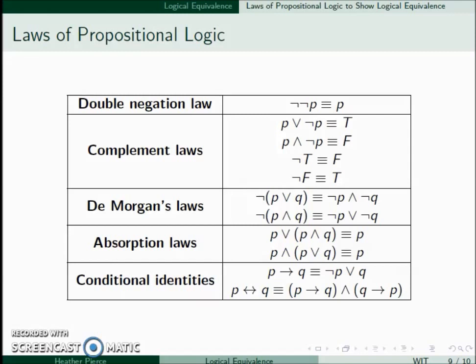The absorption law says P ∨ (P ∧ Q) is equivalent to P, and P ∧ (P ∨ Q) is also equivalent to P. The last one is the conditional identities: if P then Q is equivalent to ¬P ∨ Q, and P if and only if Q is equivalent to (if P then Q) ∧ (if Q then P).